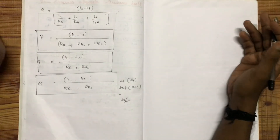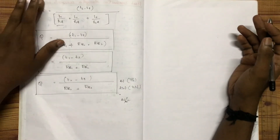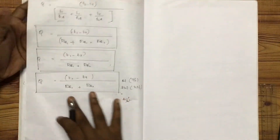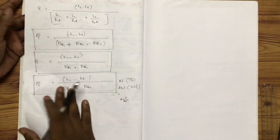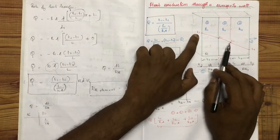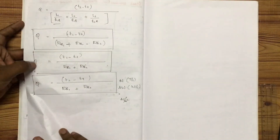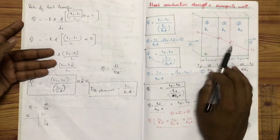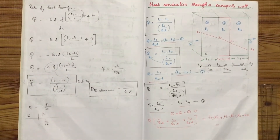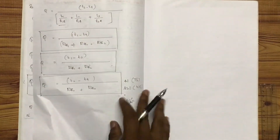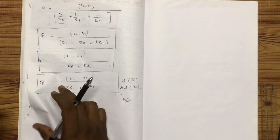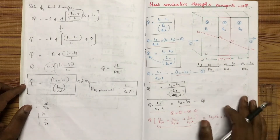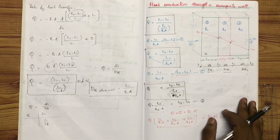Let's apply the first question. We will apply the first question where we can find the temperature. If you want to get the value of T3, we will get the value of T3. There are a lot of different materials available here. We will set it to formulate heat conduction through a composite wall. This is a practical application.